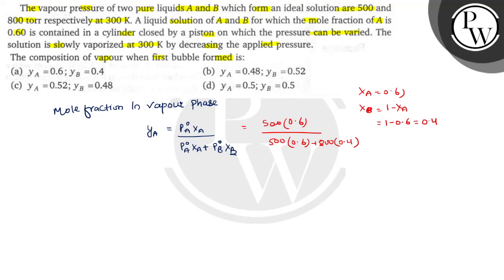To do 0 se yahan simplest ratio loge to cancel ho jayege. 5 into 0.6 is 3 plus 8 into 0.4 is 3.2. To yeh ban gaya bachow 3 upon 6.2. To yahan par aap iski value jab calculate karoge to yeh aapke paas answer aa jayega 0.48.